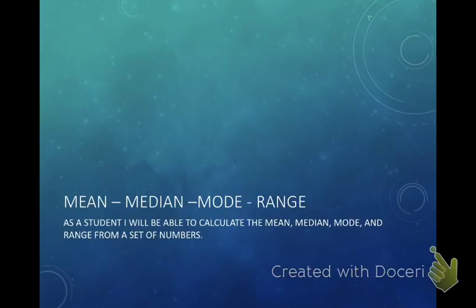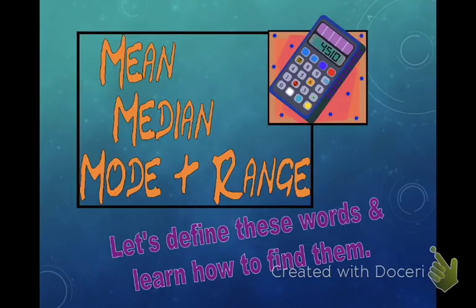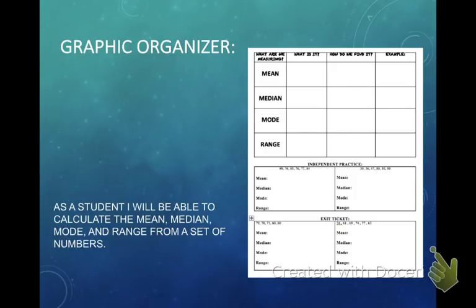Basically, your objective for this video is very simple. You should be able to calculate the Mean, Median, Mode, and Range from a set of numbers. So let's define these words and learn how to find them, plain and simple. You need this graphic organizer — Mrs. Gells and Mrs. Turner should have it for you. There is an independent task and there is an exit ticket. At the top of our graphic organizer it says: What is it? How do we find it? And an example.